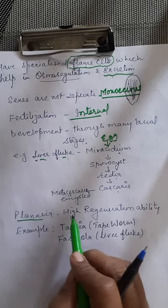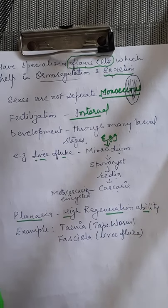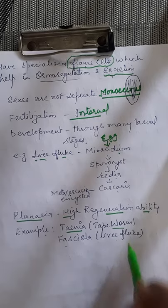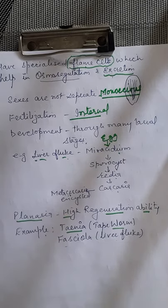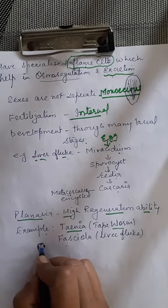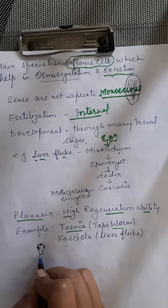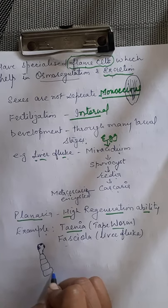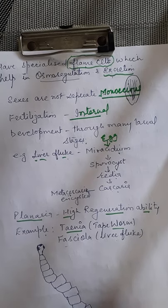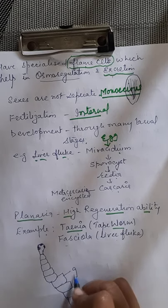Planaria has a very high regenerative ability. Other examples of Platyhelminthes are Taenia, which is called the tapeworm, and Fasciola, which is called the liver fluke. Taenia has hooks and suckers, and its body is segmented — with segments increasing in size toward the back.